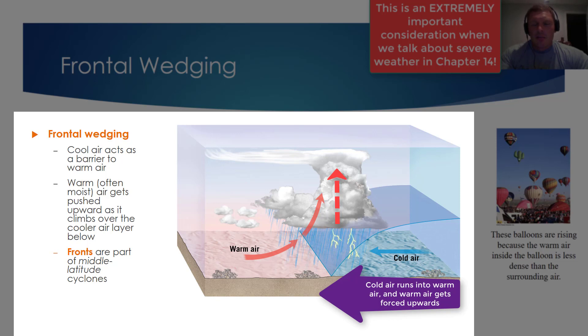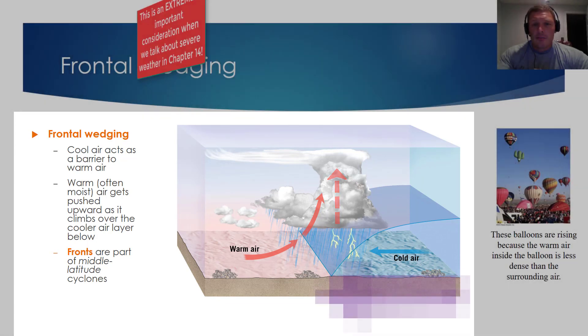Now, as I've already mentioned, we'll talk about fronts in a future VODCAST. But some of the most powerful thunderstorms that occur, occur by this very mechanism of frontal wedging.